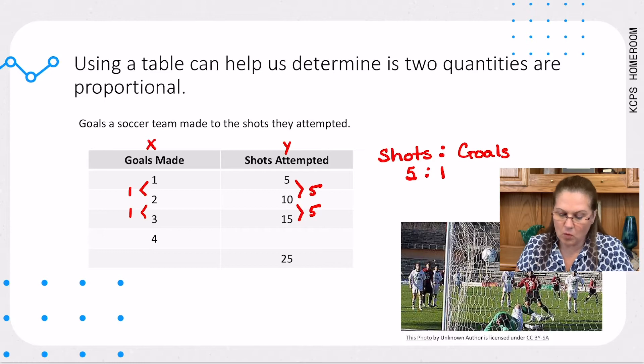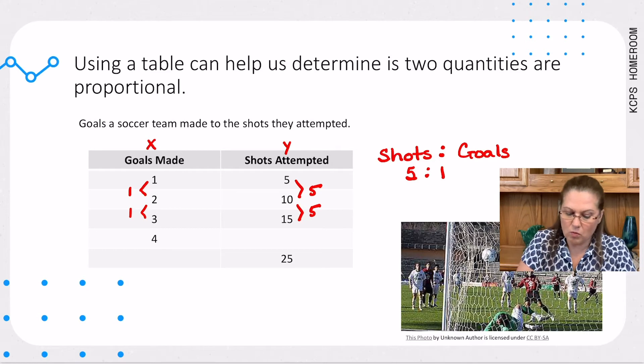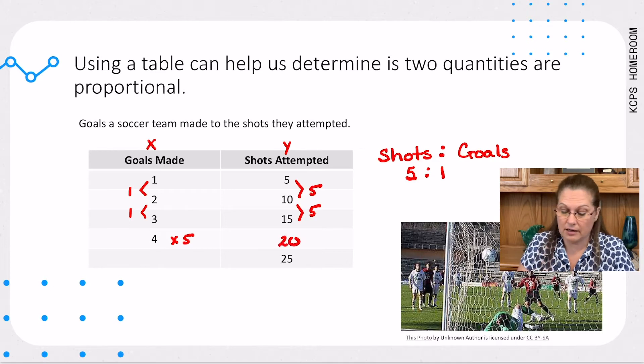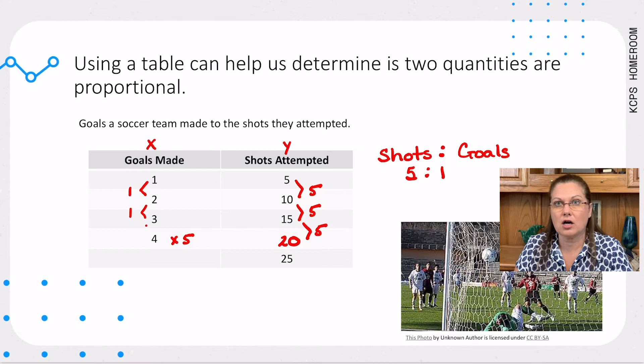So, if we look at our fourth row of our table, it says we make four goals, but our attempts are left blank. How would we figure that out if we know five shots for every goal? Probably the easiest way you're going to do this is you're going to multiply that 4 times 5 to equal our shots attempted. Now, we can go ahead and check this to make sure that our constant rate of change is the same. So, the difference between 15 and 20 is 5, and our difference between 3 and 4 is 1. So, we still have our constant ratio.